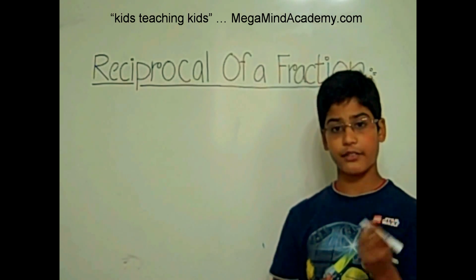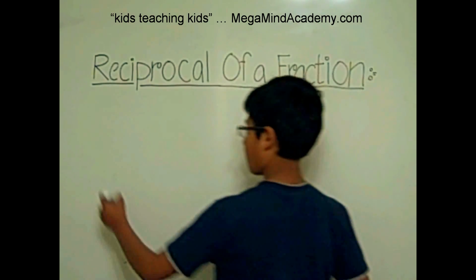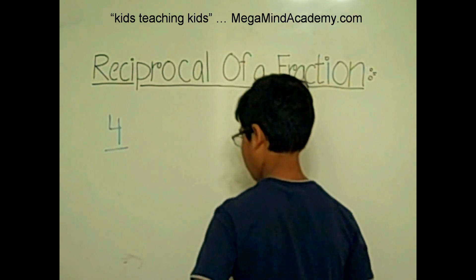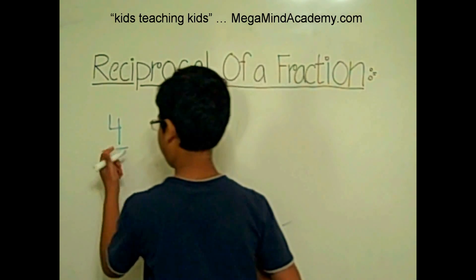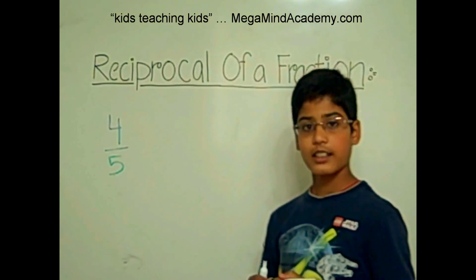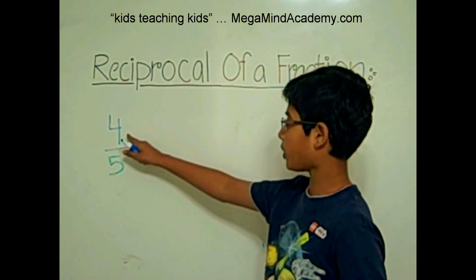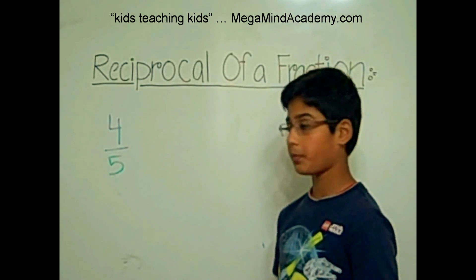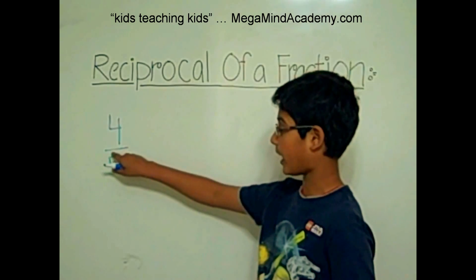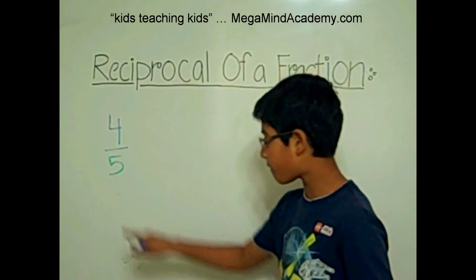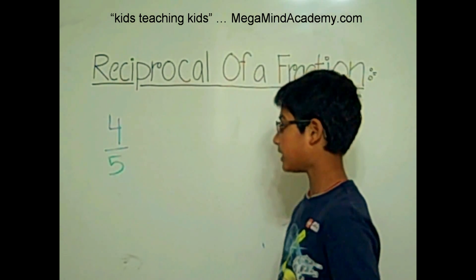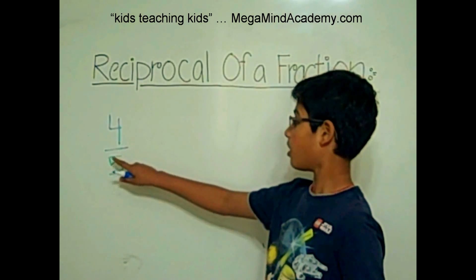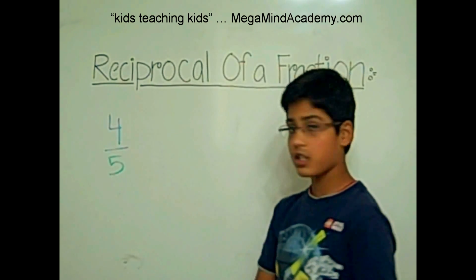So, let's say we have a fraction, and our fraction is 4 fifths. Now, the 4, which is in the blue color, is the numerator, because it is on top of the fraction line. And the 5, which is in the green color, is the denominator, because it is on the bottom or under the fraction line.